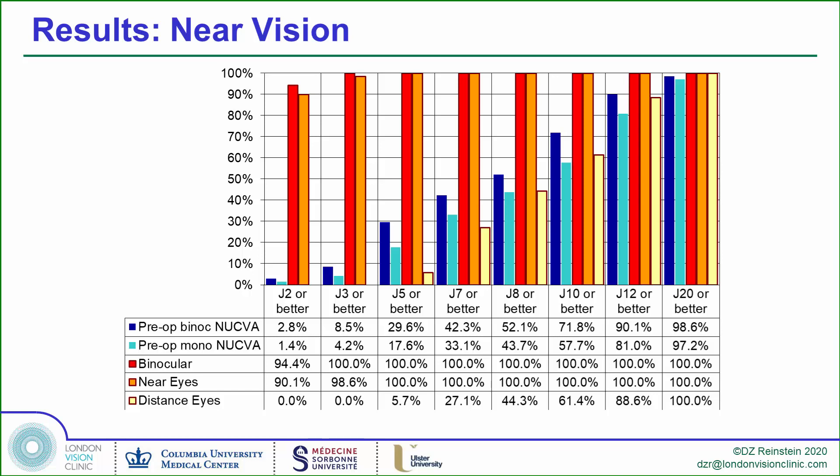Looking at the near vision results, the binocular uncorrected vision greatly improved after surgery, with binocular near vision at J2 in 94% and J3 in 100% of patients. The dominant distance eyes also contributed to near vision, as 80% of them were seeing font size 12 at near.